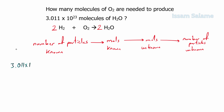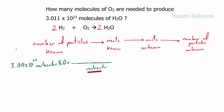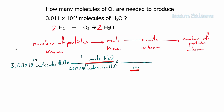We start with the given, which is 3.011 × 10²³ molecules of water. We multiply it with a fraction to convert molecules of water to moles of water — putting molecules of water in the denominator and moles of water in the numerator. We put 1 next to moles and Avogadro's number, 6.022 × 10²³, next to the molecules. Then we multiply with another fraction to convert moles of water to moles of oxygen using the mole ratio.